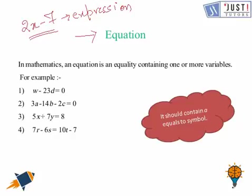But if you write it like 2x minus 7 equals 0, or equals to any variable or any constant, then this is an equation. That means an equation should contain an equals symbol.